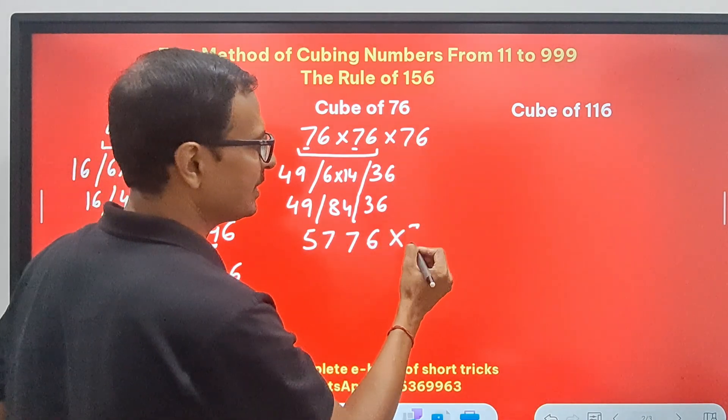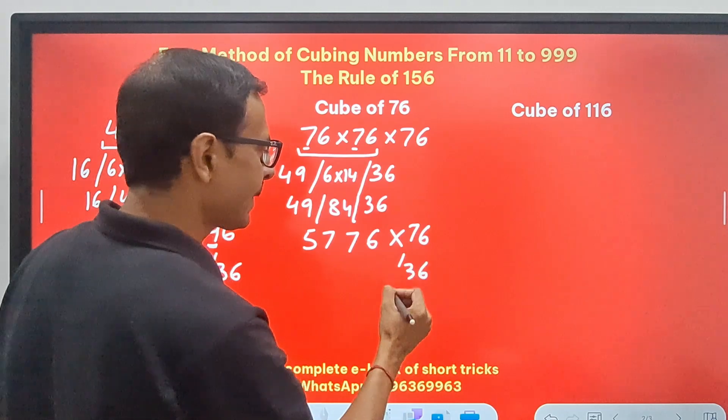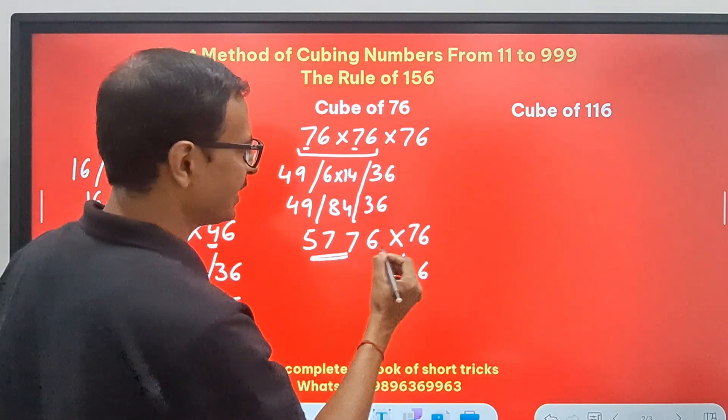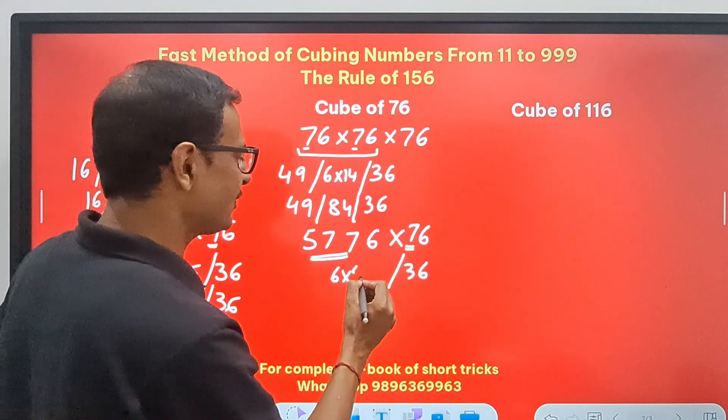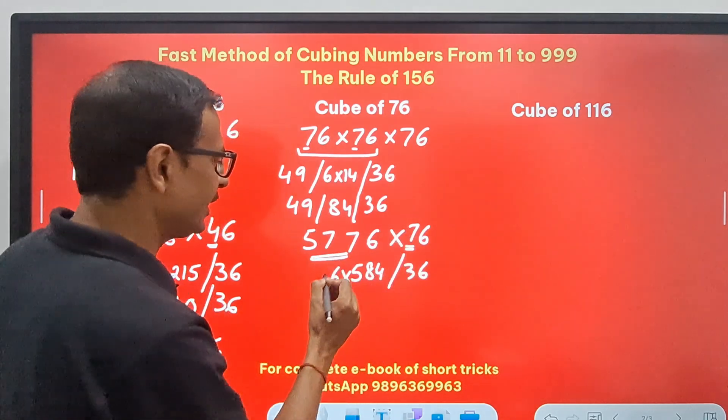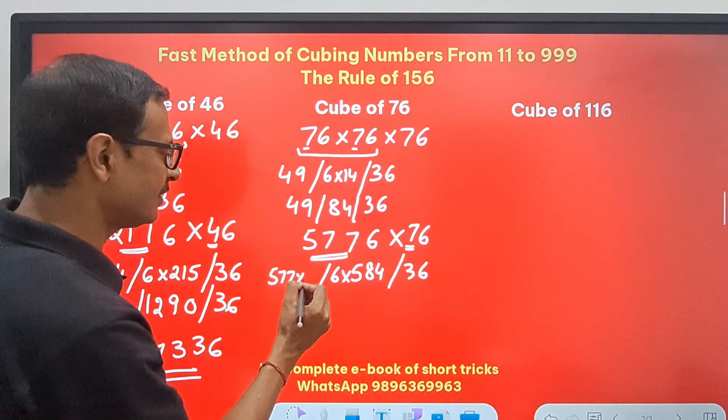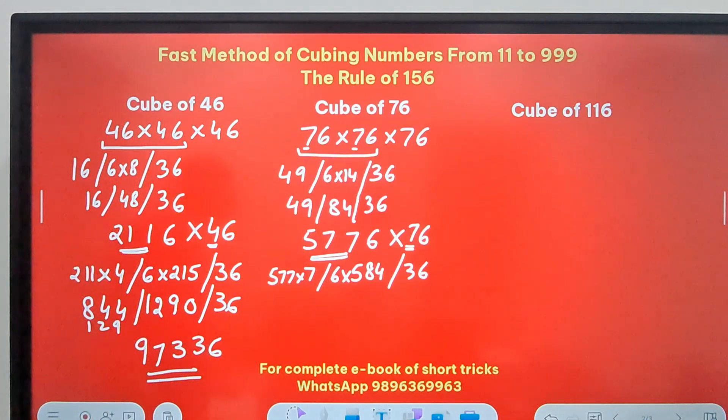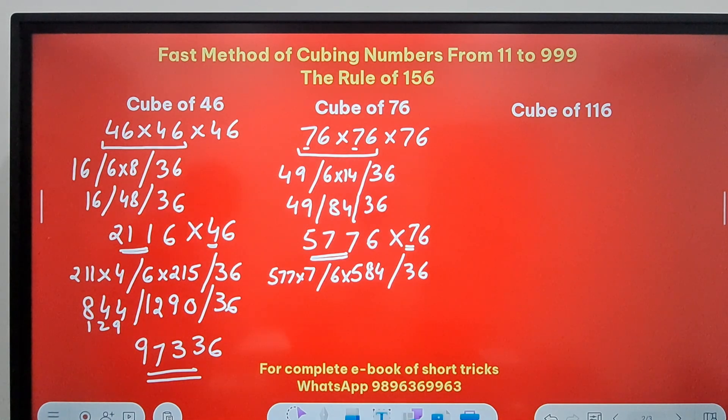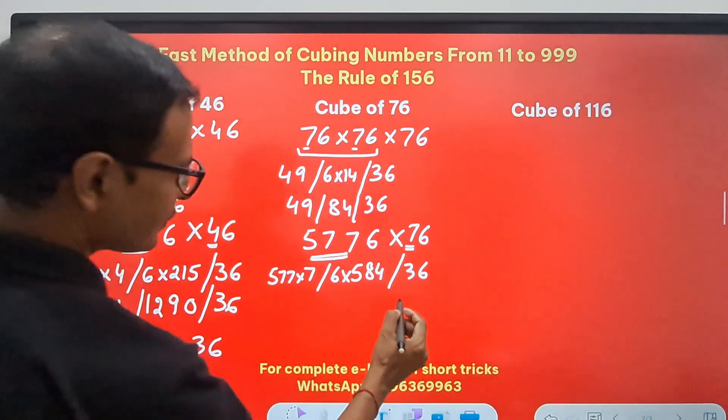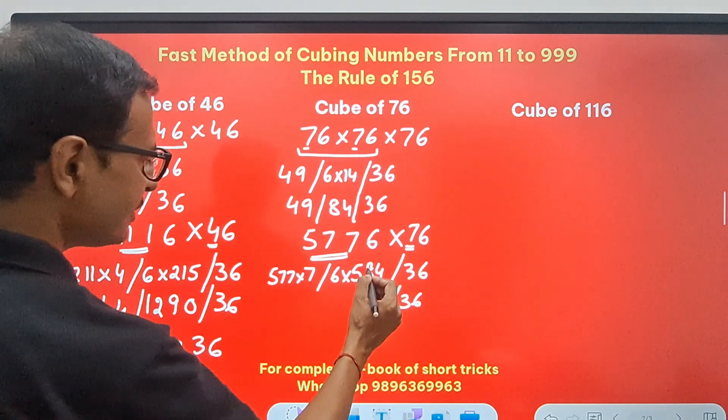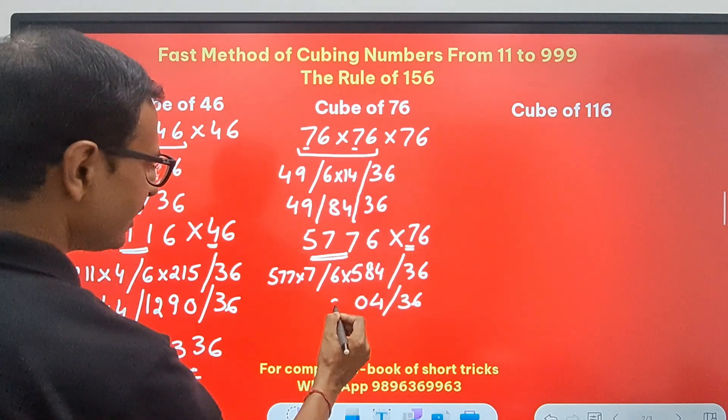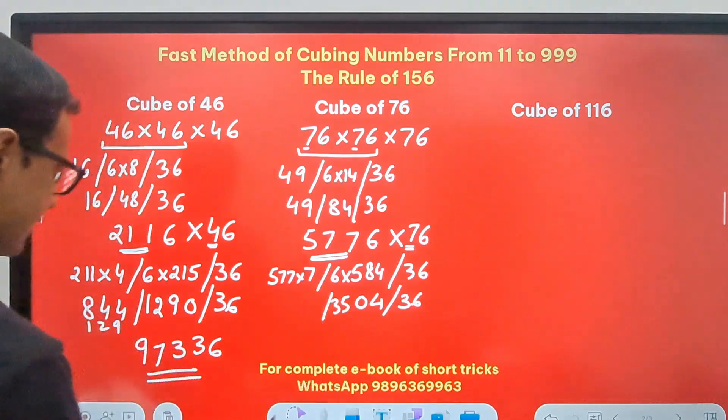And then multiply by 76. Again write 36. Apart from the 6, we have 577 and 7. So 6 times what? 577 plus 7 is 584. And finally, 577 times 7. So what numbers are you going to get here? Now this depends on how good you are in multiplying the numbers orally. 36 will obviously be there. And then 6 fours are 24, 4, 2 carry means 50, 0, 5 carry means 35. So 3, 5, 0, 4.